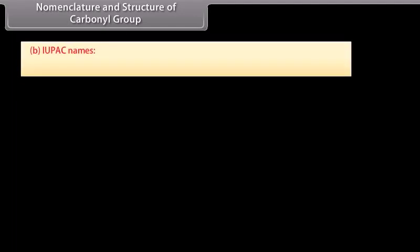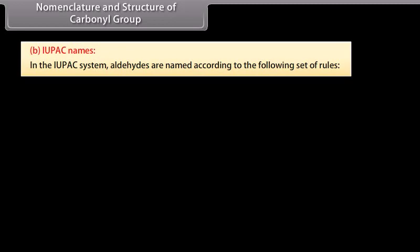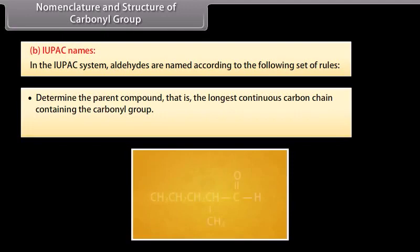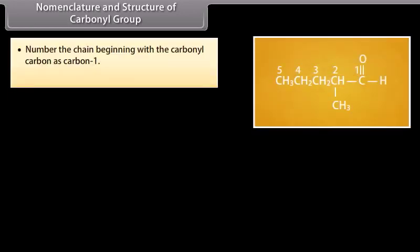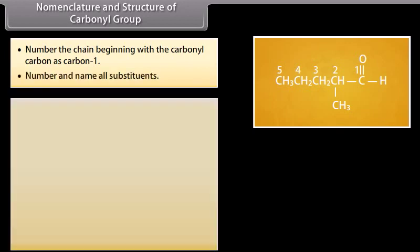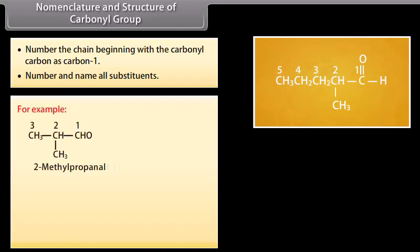In the IUPAC system, aldehydes are named according to the following rules: determine the parent compound, that is the longest continuous carbon chain containing the carbonyl group; replace the final 'e' of the parent alkane with 'al'; number the chain beginning with the carbonyl carbon as carbon 1; and number and name all substituents. For example: 2-methylpropanal, 3-bromo-2-methylbutanal.